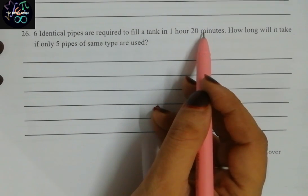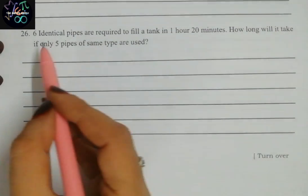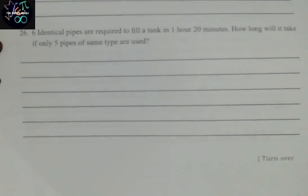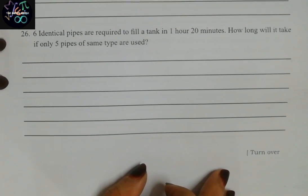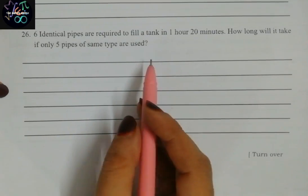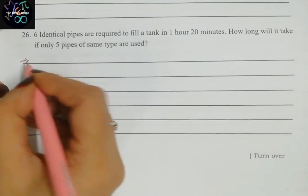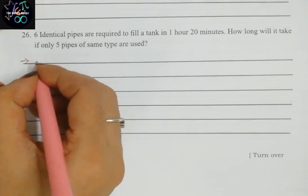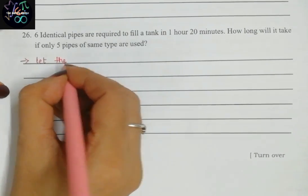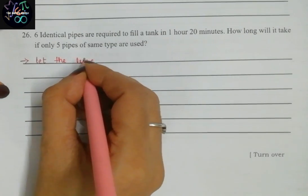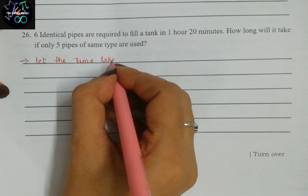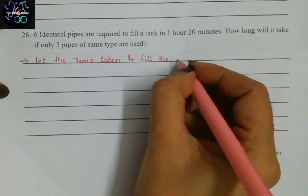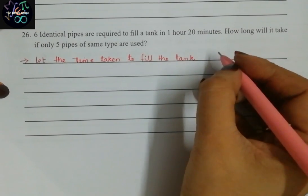Let us start question 26 now. The question is: Six identical pipes are required to fill a tank in one hour twenty minutes. How long will it take if only five pipes of same type are used? This is a question from inverse and direct proportion. We should check first which type of proportion it is. First, they have told us to find how long it will take, means we need to know the time. Let the time taken to fill the tank be x minutes.